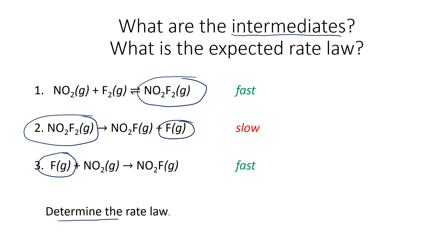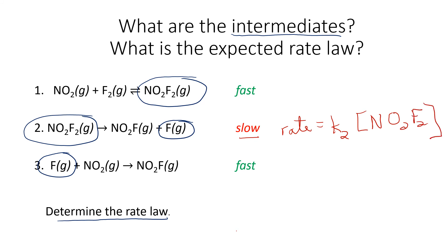We're determining the overall rate law. The expected rate law from the slow step is: rate equals k2 times NO2F2 to the first power, using molecularity. But because NO2F2 and F are intermediates, this cannot stand — we have to make substitutions.